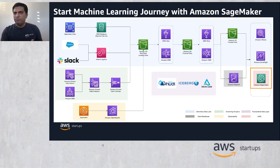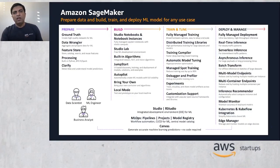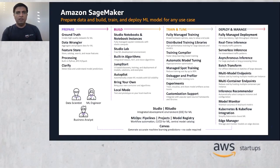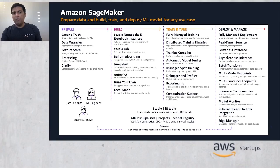So what does SageMaker offer? SageMaker includes a lot of features and capabilities. We typically talk about these falling into four categories: data preparation, model build phase, training and tuning, and deployment and management or hosting. So what machine learning data prep capabilities does SageMaker provide?